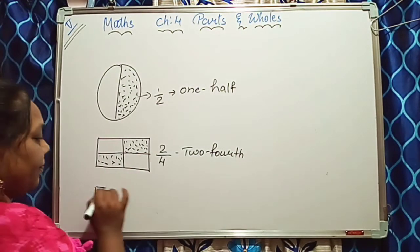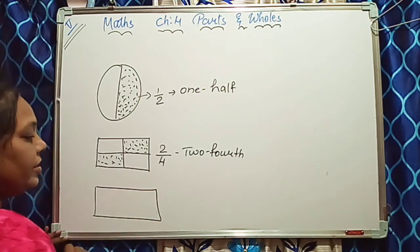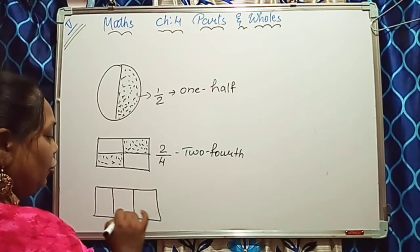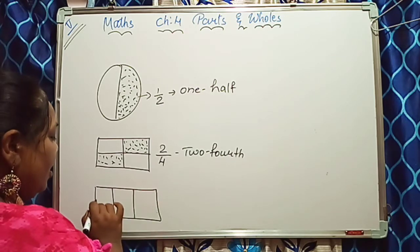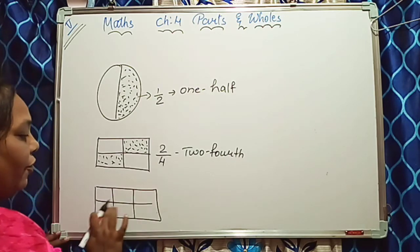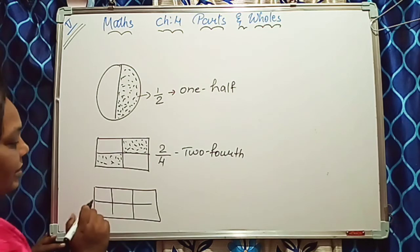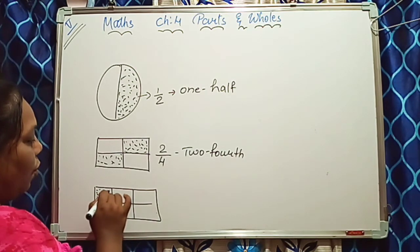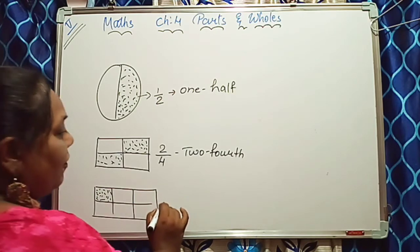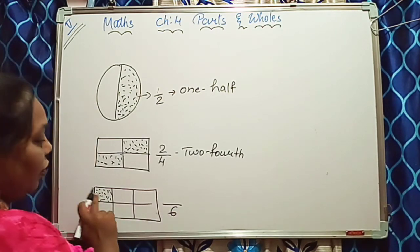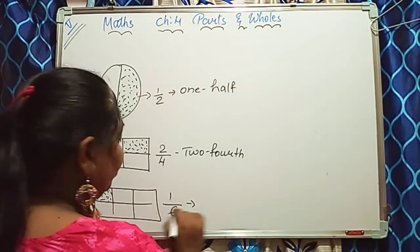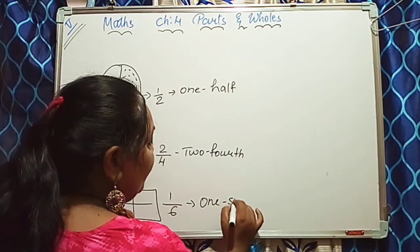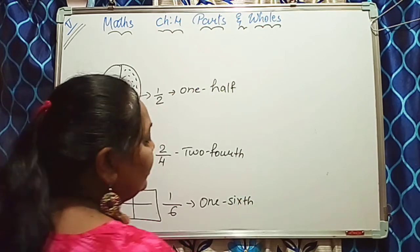As another example — rectangle again. This is a rectangle. I want six parts: two columns and three rows, giving one, two, three, four, five, six parts. I have shaded just one part. So what will I write? Six parts are there, only one is shaded. I have written one upon six — that is one sixth. We write it like this: one upon six.